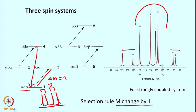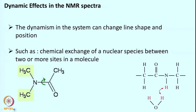We will move ahead and today discuss some interesting aspects of NMR that can arise because of dynamic factors. Molecules in solution are not static — they have various kinds of dynamics, and this dynamism can influence their line shape and position. One of those dynamics we are going to look at today is called chemical exchange: the chemical exchange of a nuclear species between two or more sites in a molecule, which can give rise to a dynamic effect in the NMR spectrum. What we mean by chemical exchange of nuclear spins is that a spin is hopping between states.